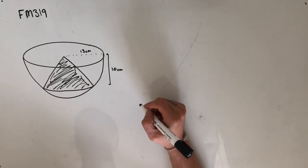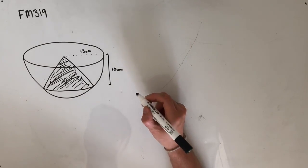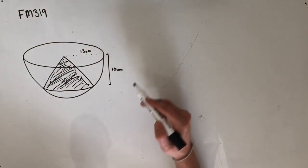A cone and spherical cap are made by pouring sugar into the bowl. The cone has a height of 10 centimetres and we're given a diagram that looks a little like this one.